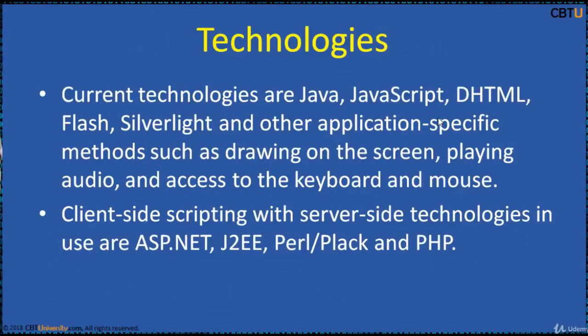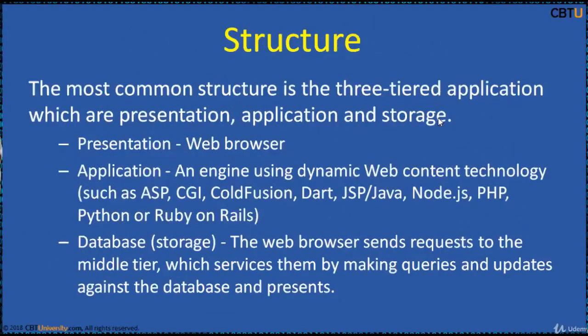These are some of the technologies that are in use. The most common structure is the three-tier application, which consists of presentation, application, and storage. Presentation is the web browser; the application tier is an engine using dynamic web content technology such as ASP, JSP, PHP, etc.; and storage is the database. The web browser sends requests to the middle tier, which services them by making queries and updates against the database.